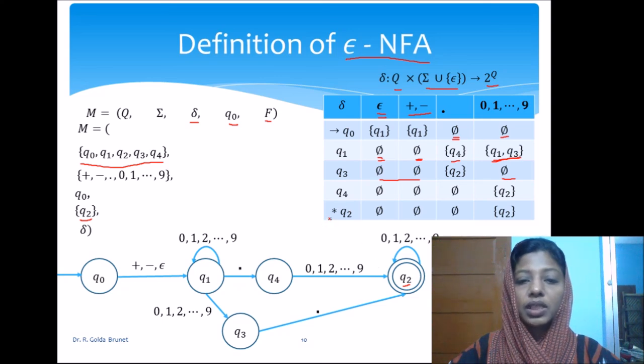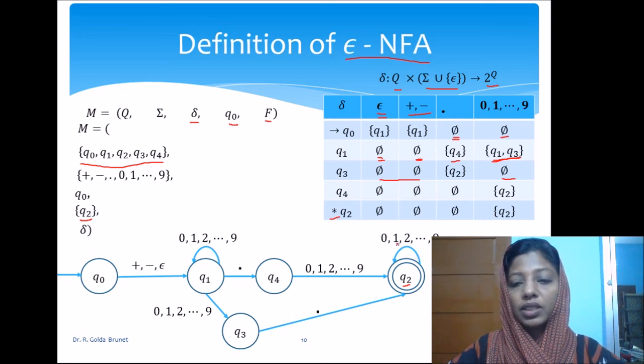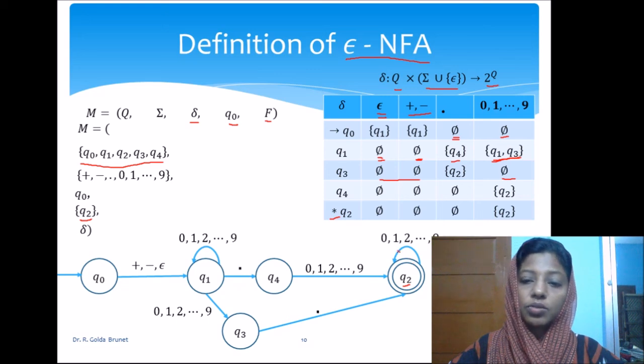And Q2 is the final state. From Q2, we have transition only for digits to the same state using the self loop. So, we have Q2 here.